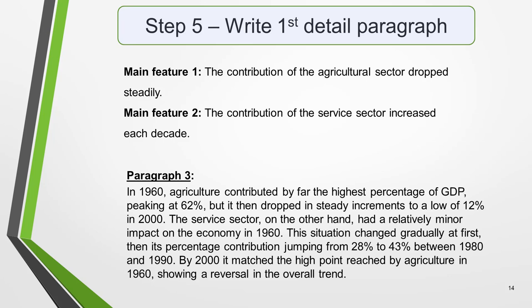Paragraphs 3 and 4 of your bar chart essay are where you include more detailed information about the data in the graphic. We have three key features to write about, and in paragraph 3 we're going to write about the first two. Here's our third paragraph: 'In 1960, agriculture contributed by far the highest percentage of GDP, peaking at 62%, but it then dropped in steady increments to a low of 12% in 2000. The service sector, on the other hand, had a relatively minor impact on the economy in 1960. This situation changed gradually at first, then its percentage contribution jumped from 28% to 43% between 1980 and 1990. By 2000, it matched the high point reached by agriculture in 1960, showing a reversal in the overall trend.'